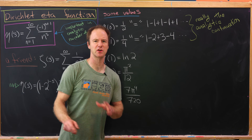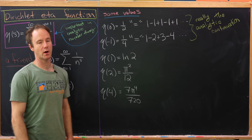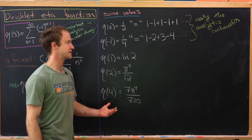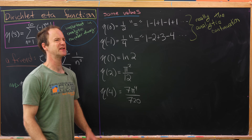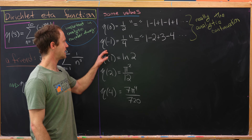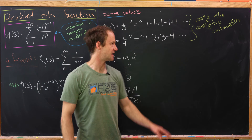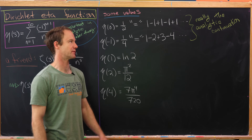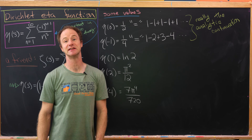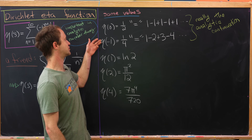Let's look at some values of this function first. So eta of 0 is equal to 1 half. But if you write that in terms of the definition, that's 1 minus 1 plus 1 minus 1 plus 1, and so forth. This is known as Grandi's series, which of course does not converge. And then eta of minus 1 is equal to a quarter, but if you plug that into the series definition, you get the alternating sum of natural numbers — this is some sort of analytic continuation of this definition.